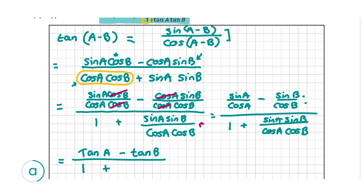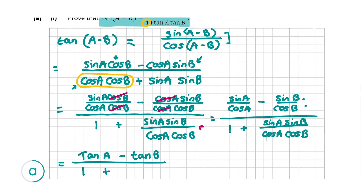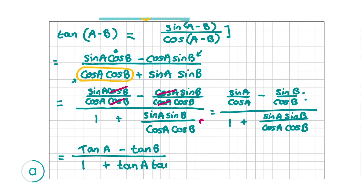For the denominator, we have 1 plus sin A over cos A multiplied by sin B over cos B, which by the same rule gives us 1 plus tan A times tan B. So we have proved that tan of A minus B equals tan A minus tan B, all over 1 plus tan A tan B. That is our final answer for this proof, and for this question you're going to get a total of 10 marks.